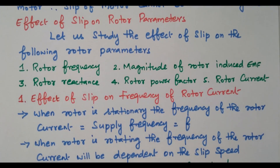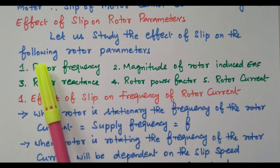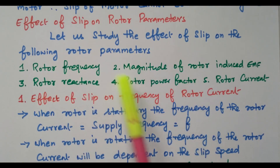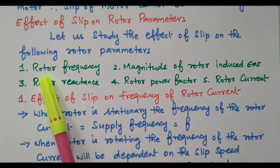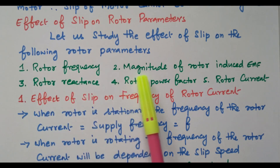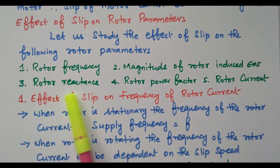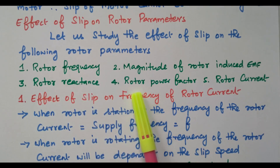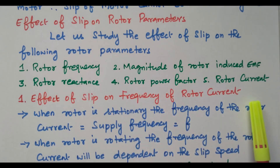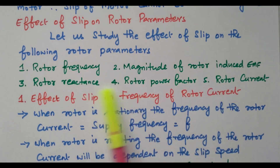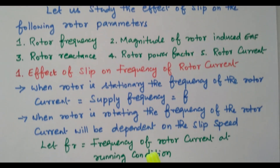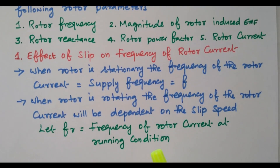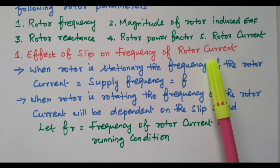Now we will see the effect of slip on rotor parameters. We are going to study 5 parameters: rotor frequency, magnitude of rotor induced EMF, rotor reactance, rotor power factor, and rotor current. We will analyze the effect of slip on each of these 5 rotor parameters.